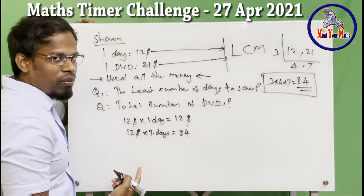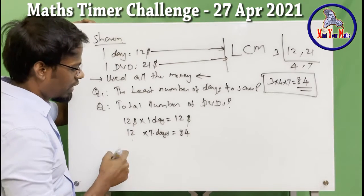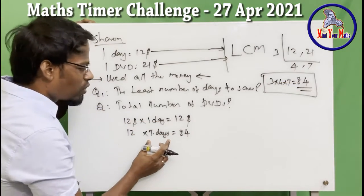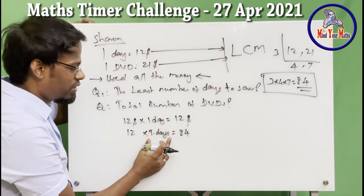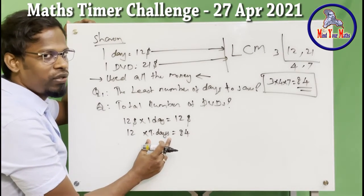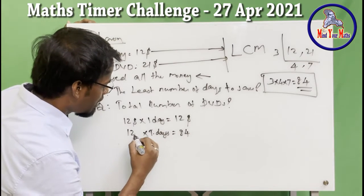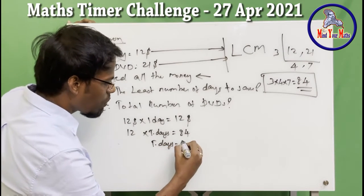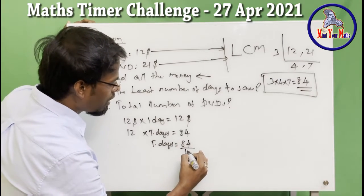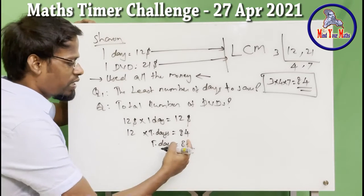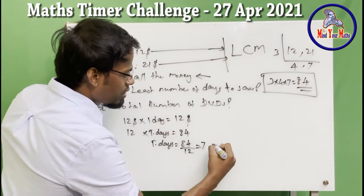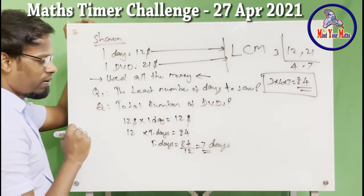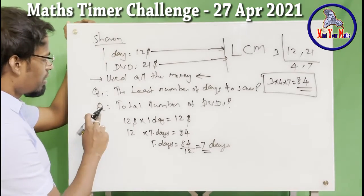We need to find the total number of days. We have 12 × total days = 84. So total days = 84 ÷ 12 = 7. She needed to save for 7 days. That is the answer to Question 1.